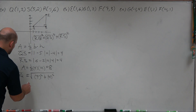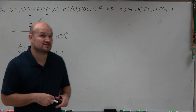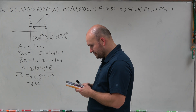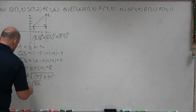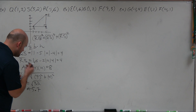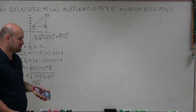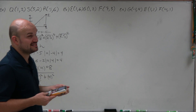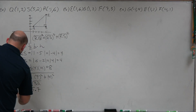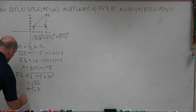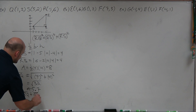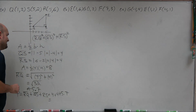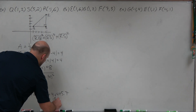We're going to round to the nearest tenth, so the square root of 32 is going to be 5.7. I don't like rounding radicals — I prefer simplifying them — but at this point we're just going to round to the nearest tenth. The perimeter equals RQ plus QS plus RS, which is 4 plus 4 plus 5.7, equaling 13.7.